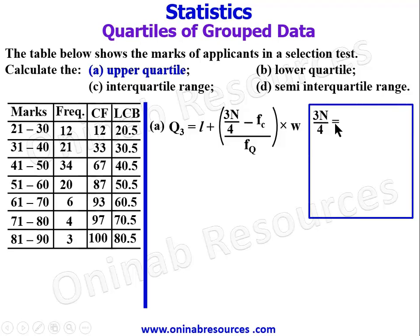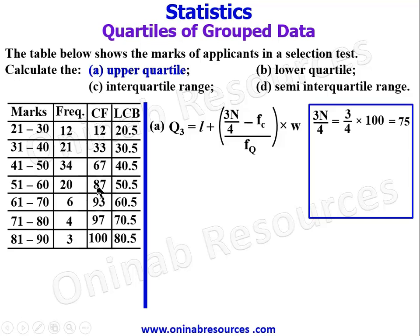3n over 4 equals 3 over 4 multiplied by n. Our n is 100, so 100 divided by 4 gives 25, times 3 gives 75. To find the upper quartile class, we go to the cumulative frequency and see where 75 is accommodated. 75 falls within the cumulative frequency of 87, meaning the 75th item is within the class interval 51 to 60. So that is our upper quartile class.